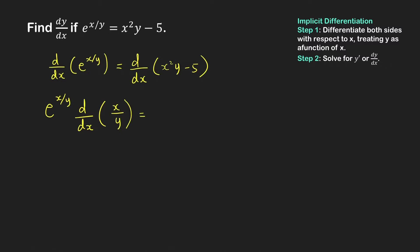The right-hand side is a product of two functions of x: x squared and y, which is a function of x. So we use the product rule. Taking the derivative of x squared gives 2x, times the second factor y, plus copying the first factor x squared times the derivative of y, which is y prime. The derivative of the constant 5 is 0, so we only have this expression on the right-hand side.